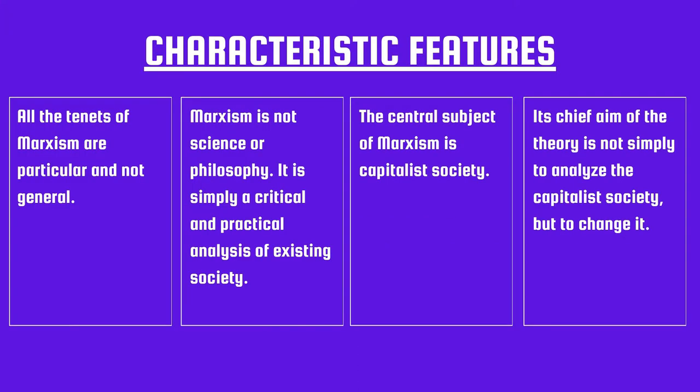Moving on to the characteristic features of Marxism theory, there are four. The first is that all the tenets of Marxism are particular and not general. Marxism is not science or philosophy — it is simply a critical and practical analysis of existing society. The third characteristic is that the central subject of Marxism is capitalist society, and the last is that its chief aim is not simply to analyze capitalist society but to change it as well.